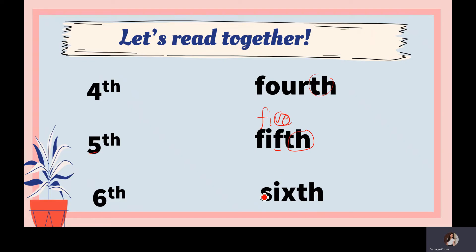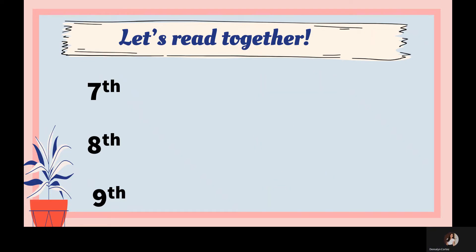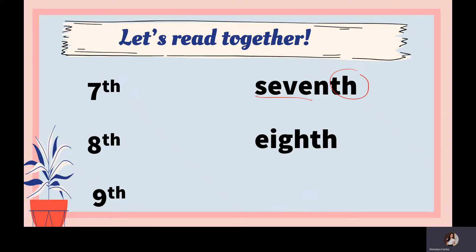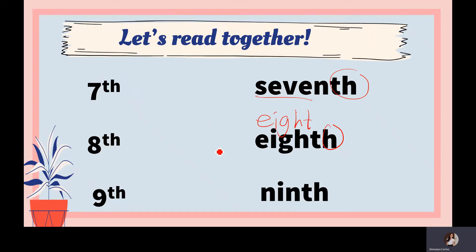For 'sixth,' it's the same spelling as 'six' — just add TH. For 'seventh,' the same spelling as 'seven,' just add TH. For 'eighth,' the spelling of eight is E-I-G-H-T — add H, giving H-T-H at the end, making 'eighth.' For 'ninth,' the original spelling is 'nine' — remove the E and add TH to get 'ninth.'